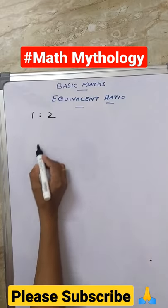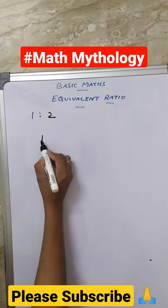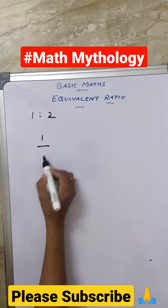First, you write this ratio in the form of a fraction. That is, write the first number on the numerator and the second number on the denominator.